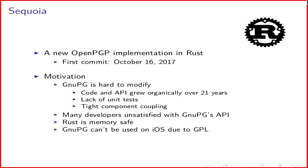So Sequoia, what is Sequoia? The first commit was done on October 16, 2017, so the project is just over a year old. We decided to do a new OpenPGP implementation for a number of reasons, but the primary motivator was based on our experience using GNU-PG. We actually hacked on GNU-PG for several years and discovered that GNU-PG is actually kind of hard to modify.